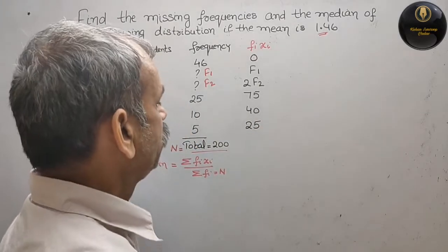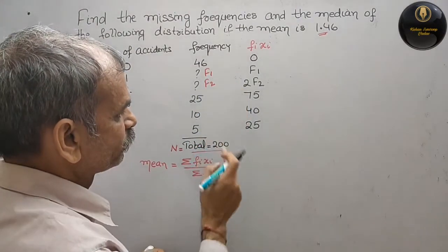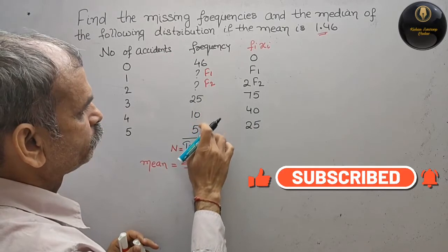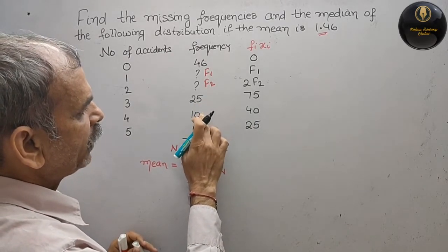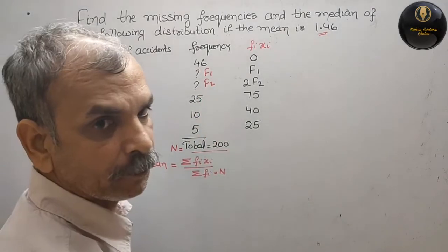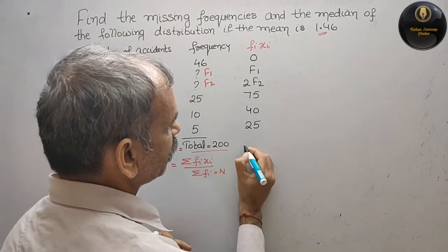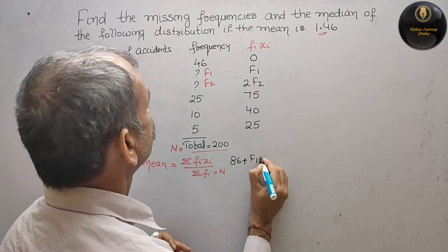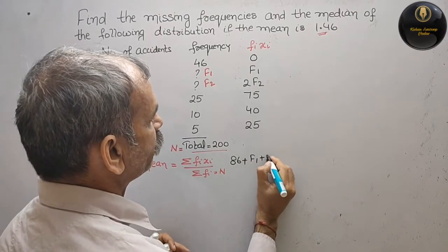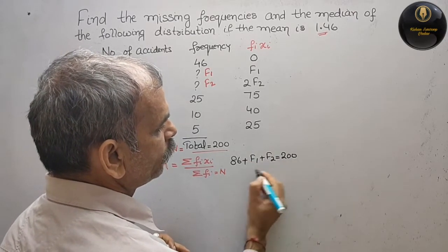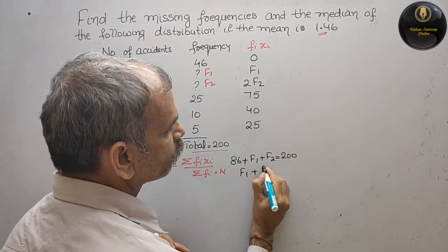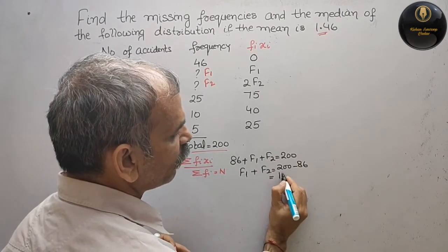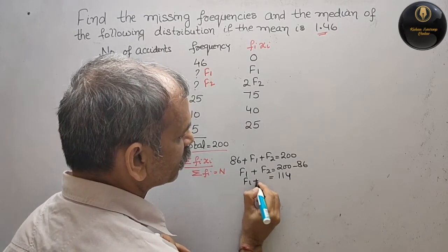3 into 25 is 75, 4 into 10 is 40, 5 into 5 is 25. Now add this: 46 plus 25, 10 is 35, 40, 46 plus 40 we will get 86. So now it will come as 86 plus f1 plus f2 that is equal to 200. So f1 plus f2, 200 minus 86 that is equal to 114. f1 plus f2 is 114.